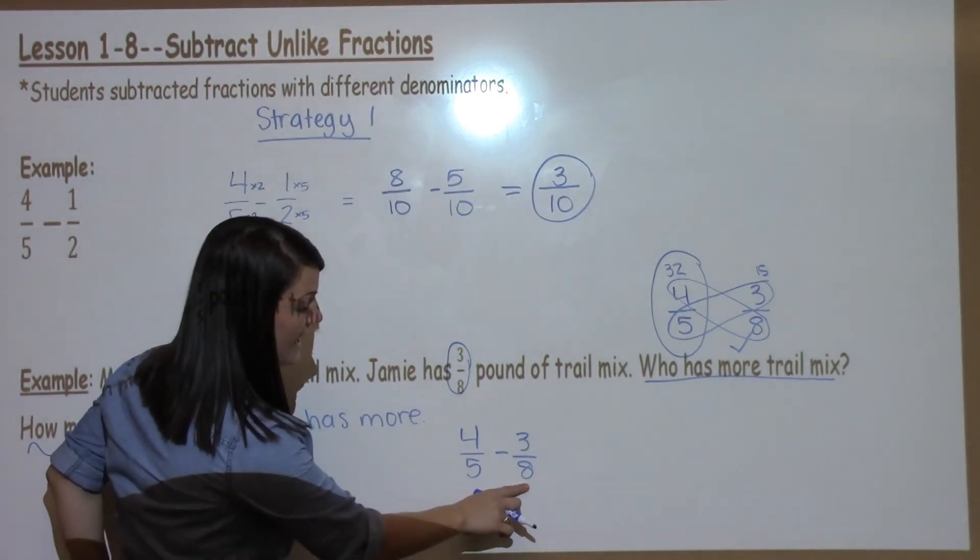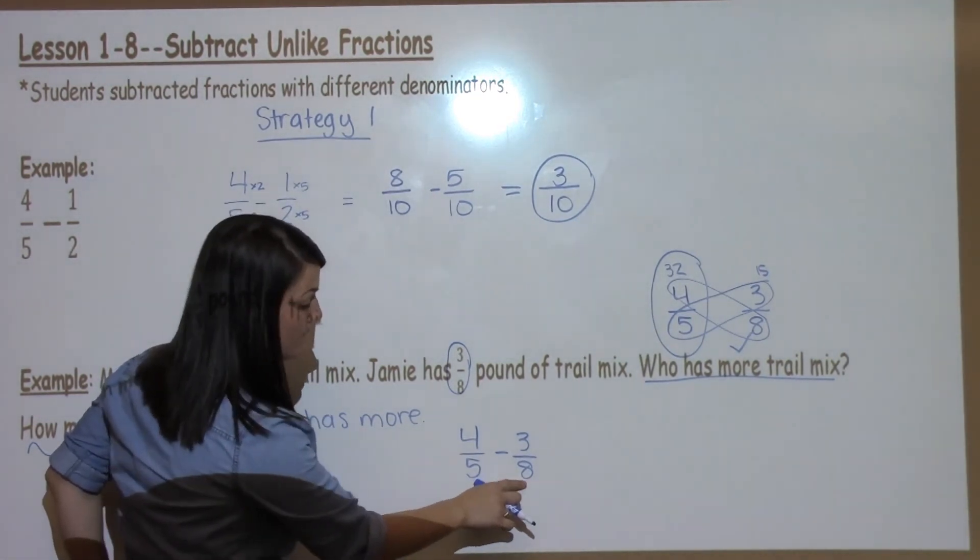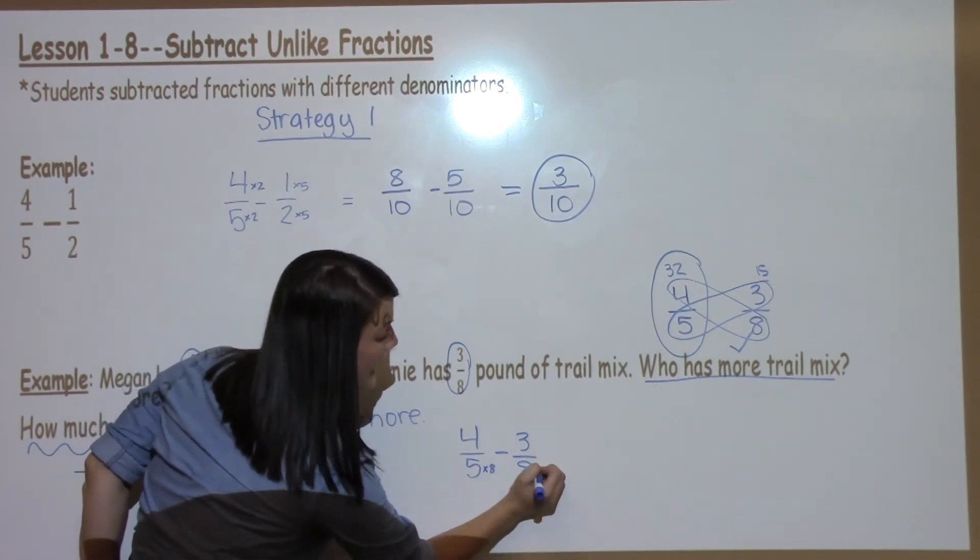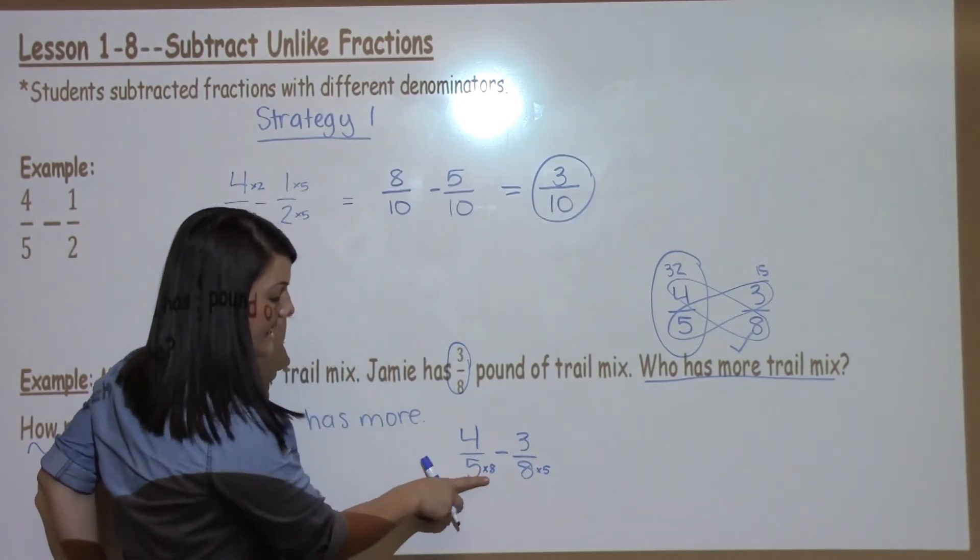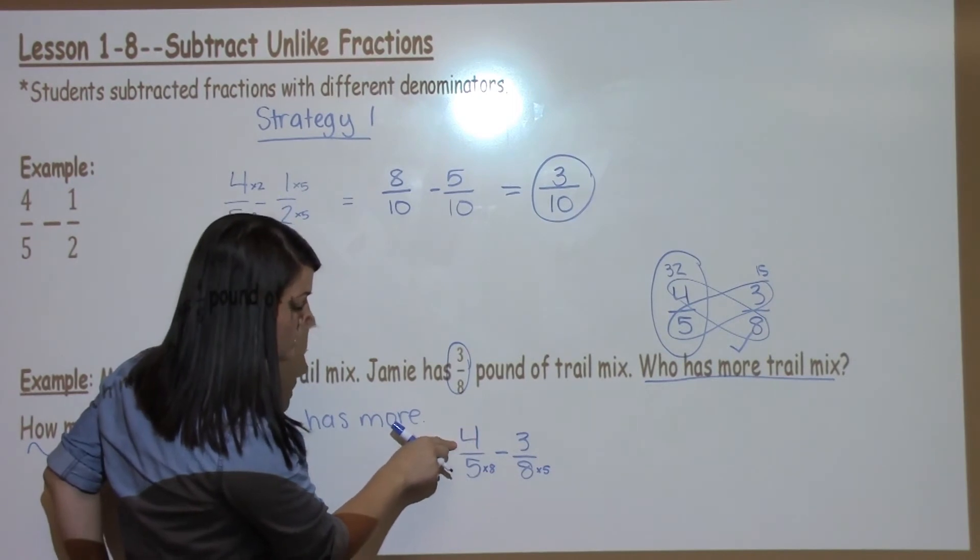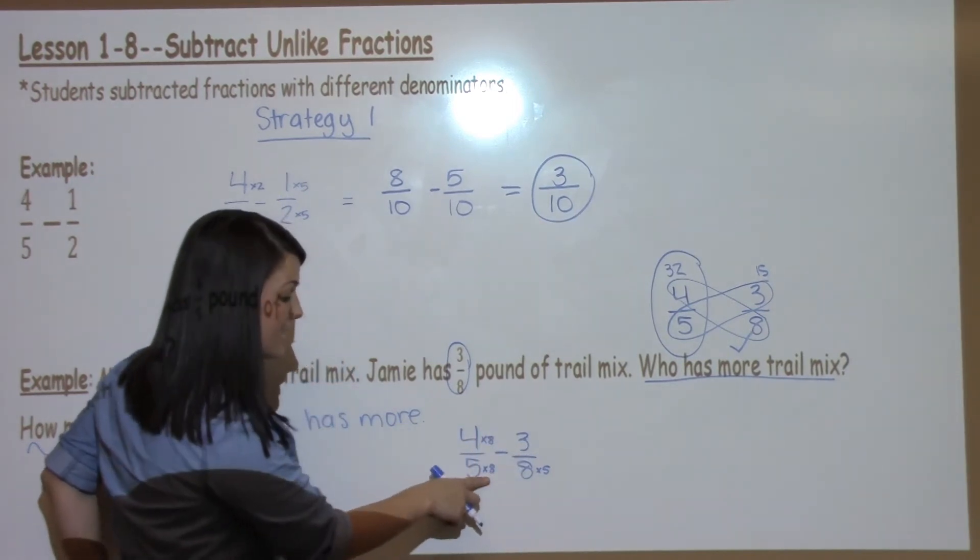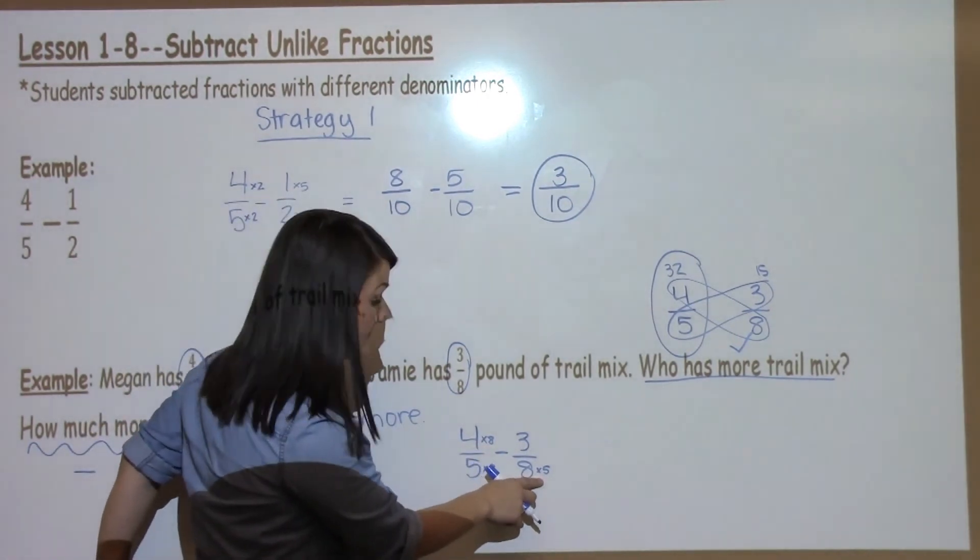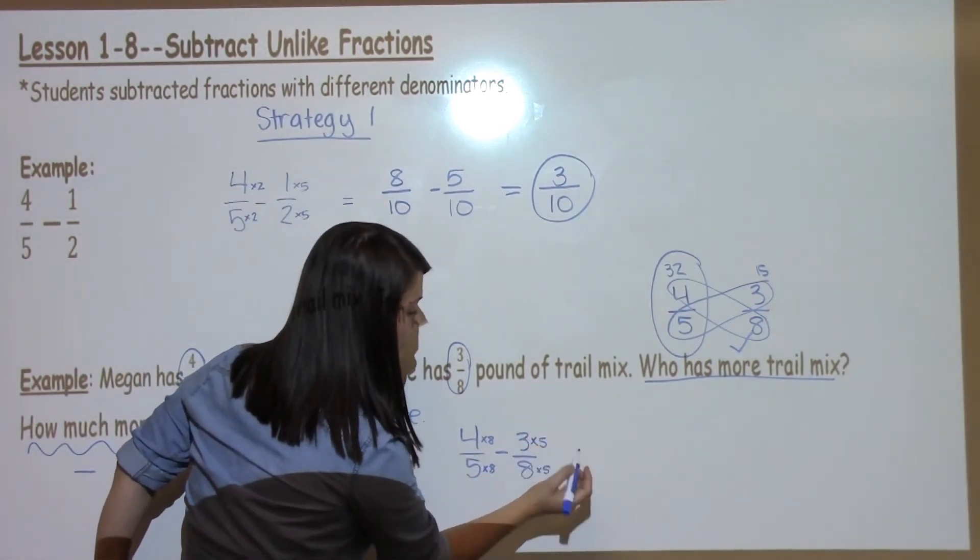In Strategy 1 we just multiply the first denominator by the second and so on. So I'm going to take 5 times 8 and 8 times 5. Anything I do to the bottom I must do to the top when I'm working with fractions. I took the bottom times 8 so I must take the top times 8. Over here I took the bottom times 5 so I must take the top times 5.